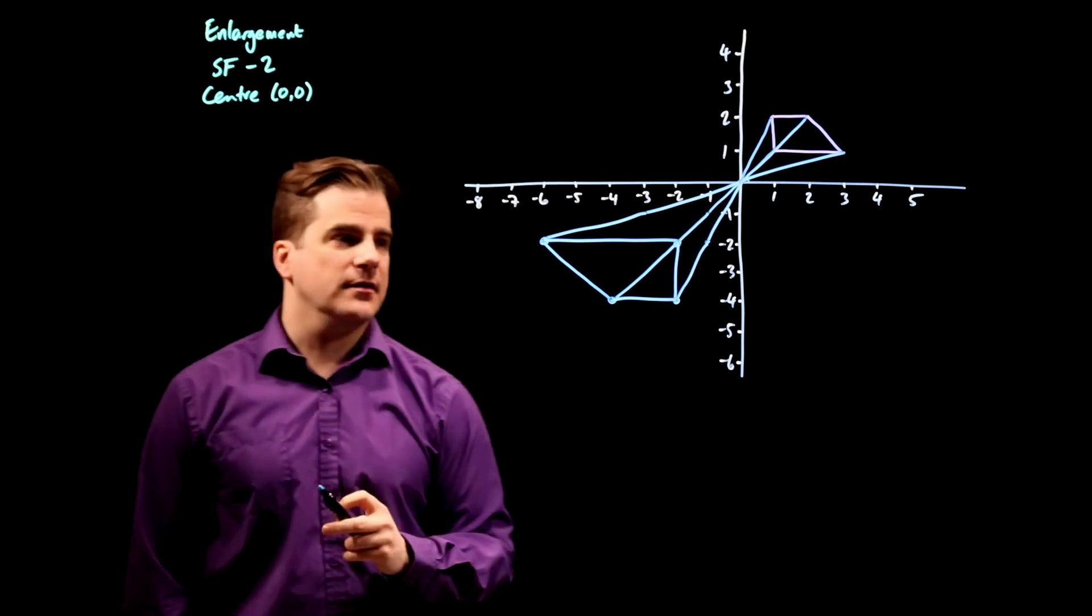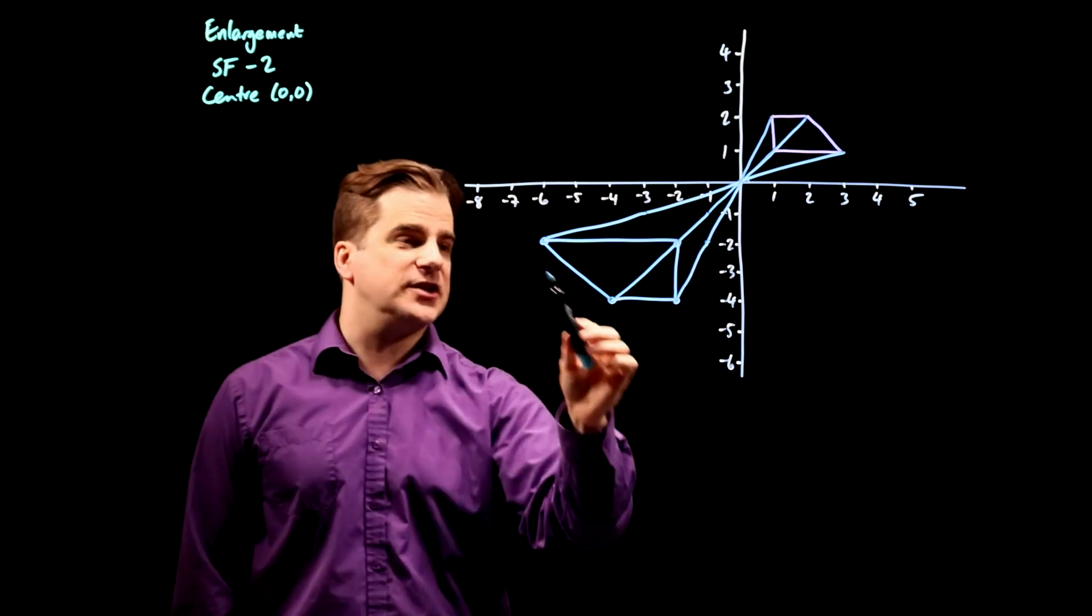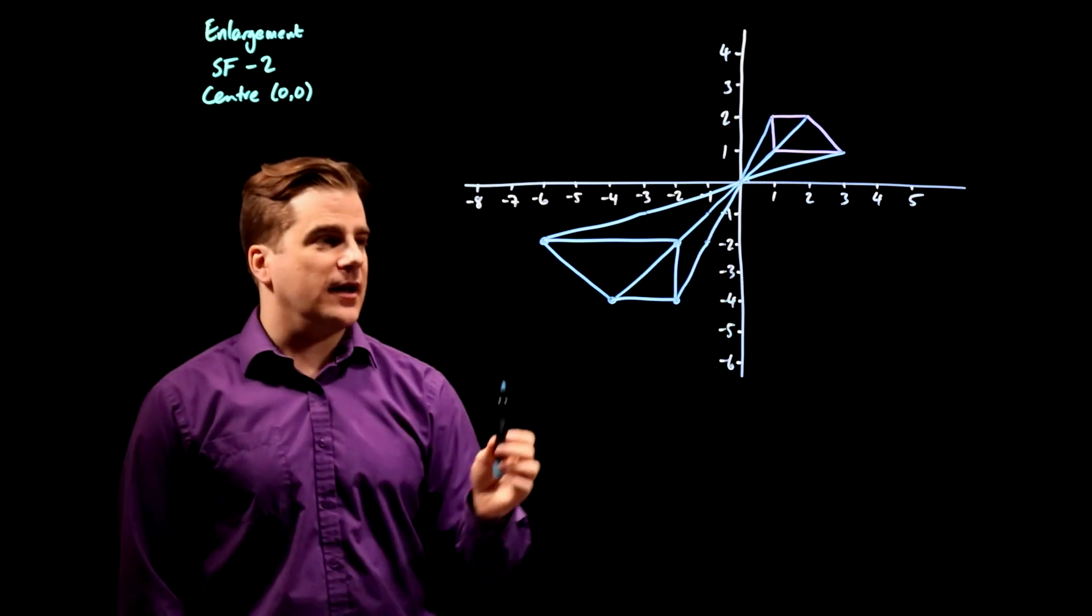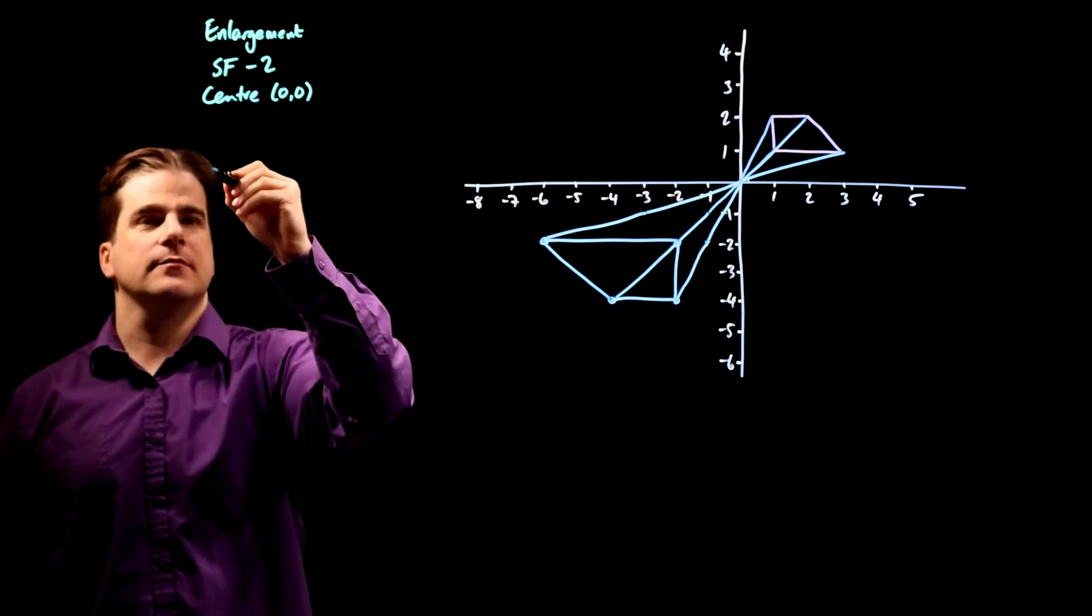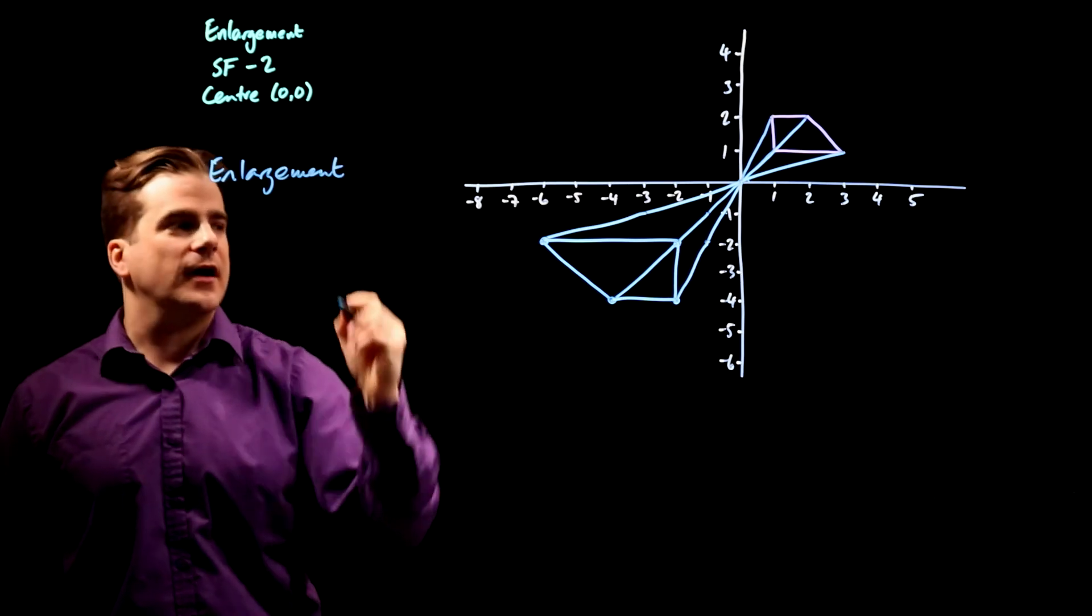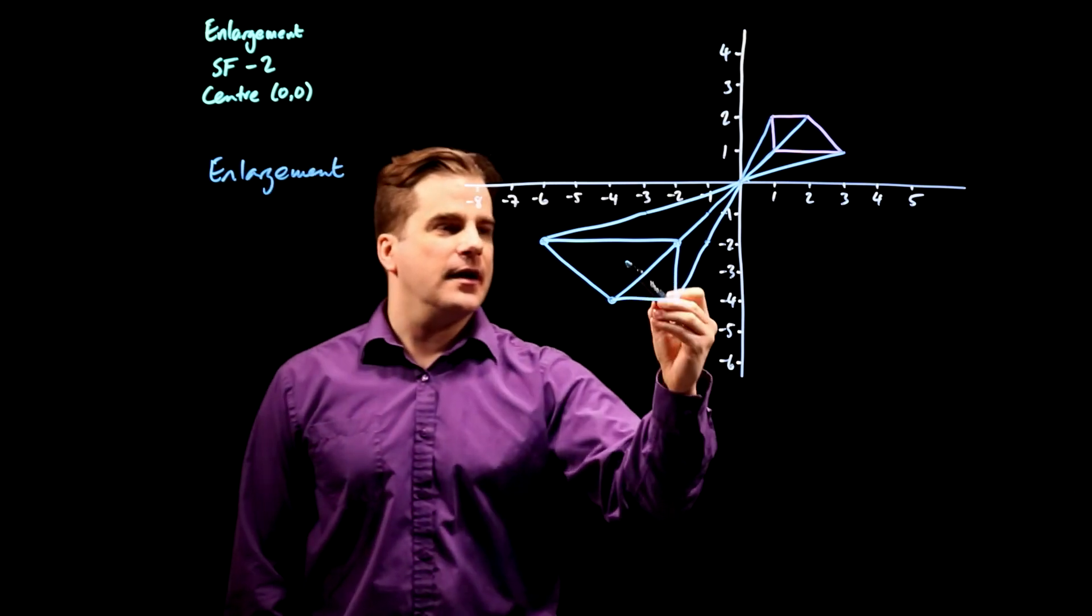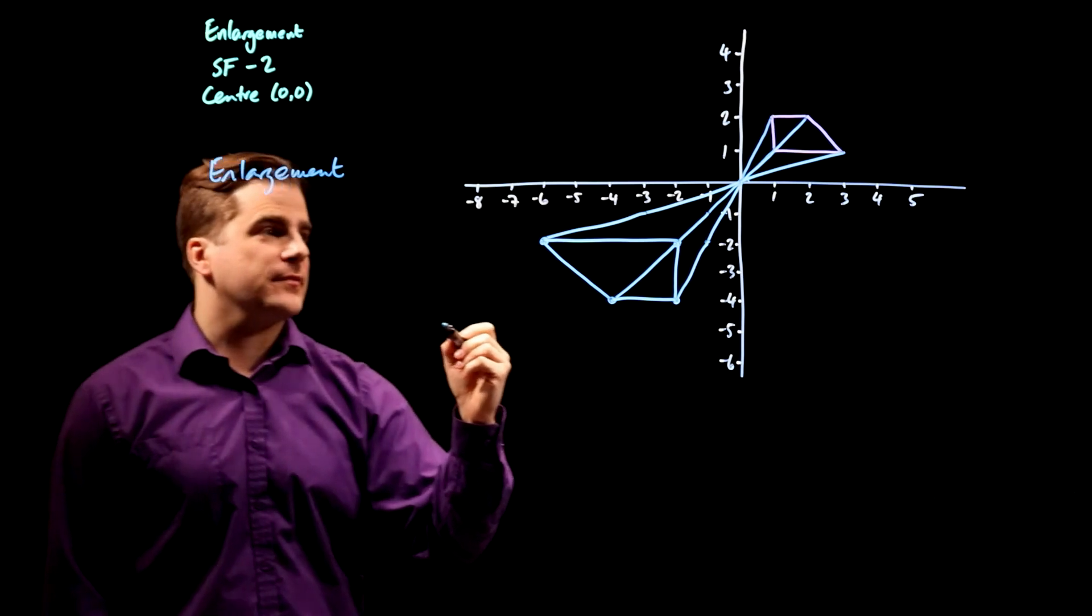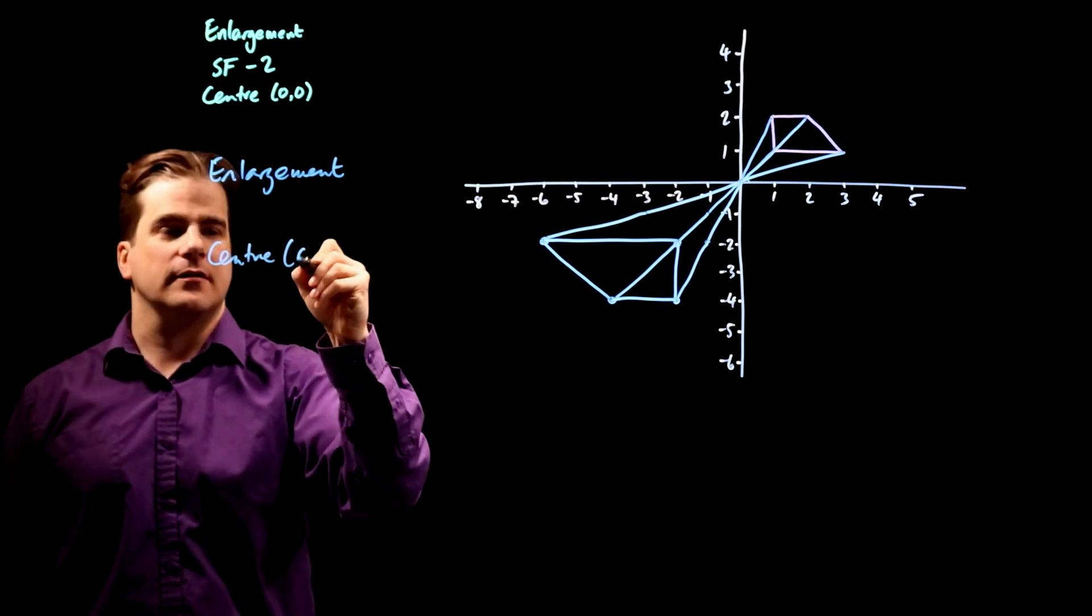For the final bit, we have to describe the transformation that would take this shape onto that shape. Well, it's the opposite, isn't it? So it's going to be an enlargement. I know it's getting smaller, but technically it's still an enlargement. It's going through this point here. So the center is still going to be (0,0).